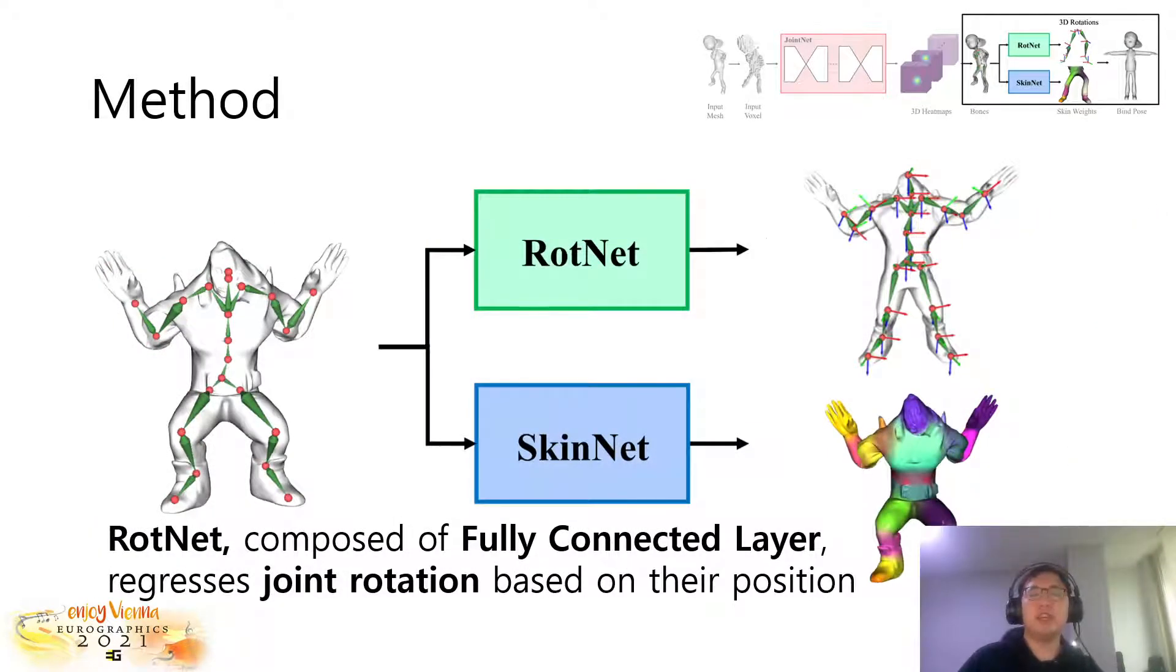For RodNet, we take joint position as input and regress the joint rotations using a fully-connected network. The target joint rotation matrix follows the BioVision hierarchy format commonly used in the representation of the joint rotation matrix. For training, we used geodesic distance between the target and predicted rotation matrices as the loss function. Using the regressed joint rotation, we can transform the character to its bind pose by inversing the skeletal animation process.